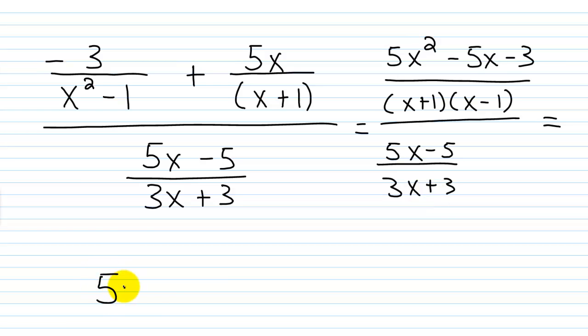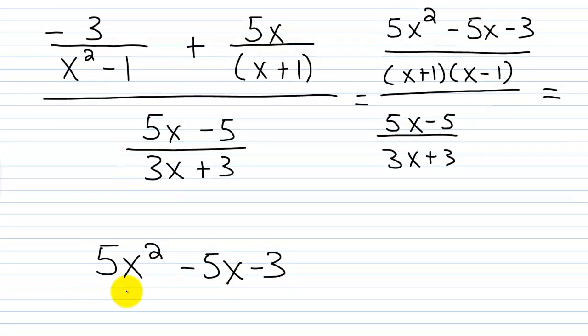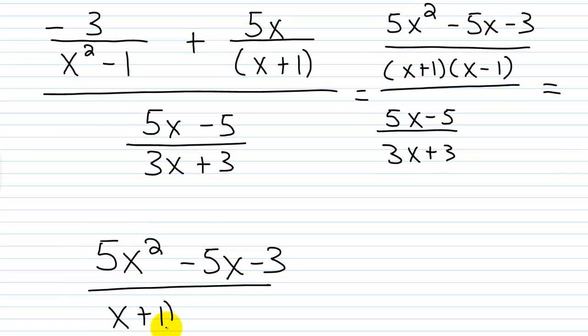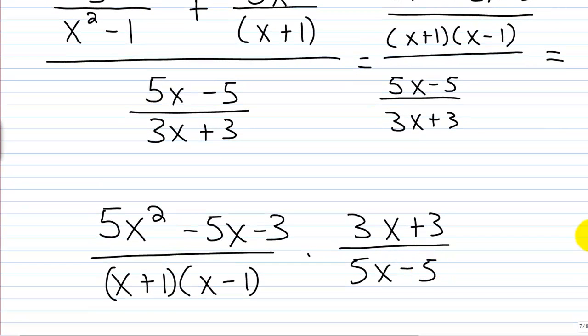So we're going to have 5x squared minus 5x minus 3 over x plus 1 times x minus 1. And we're multiplying this by the reciprocal of this guy here, which would be 3x plus 3 over 5x minus 5. Now,